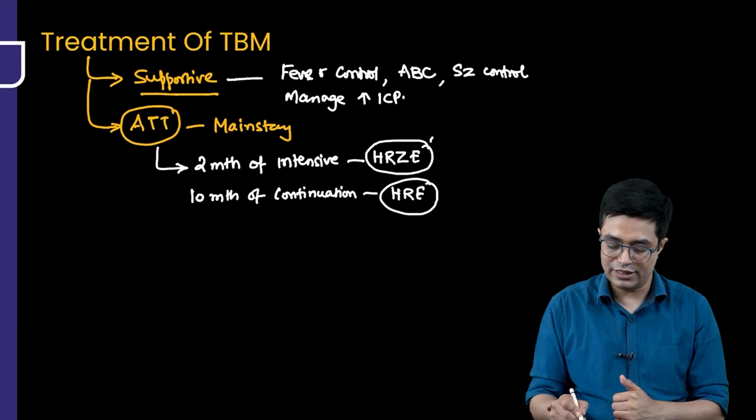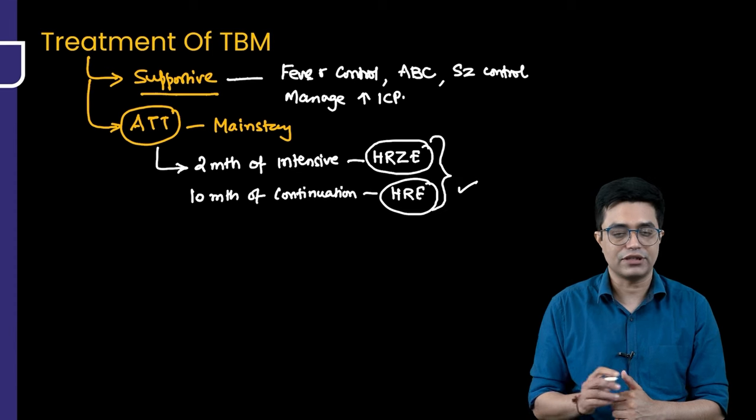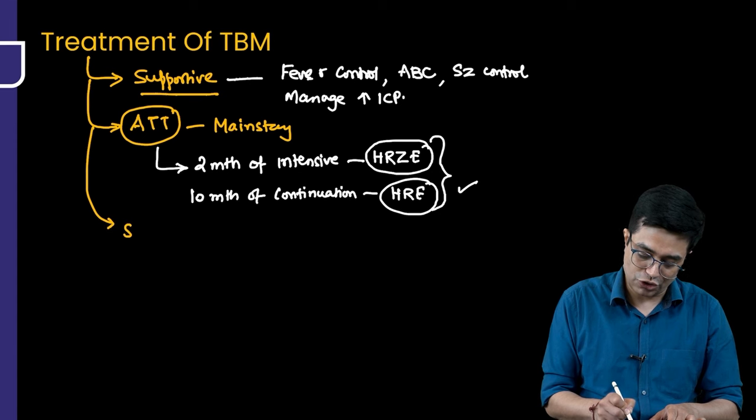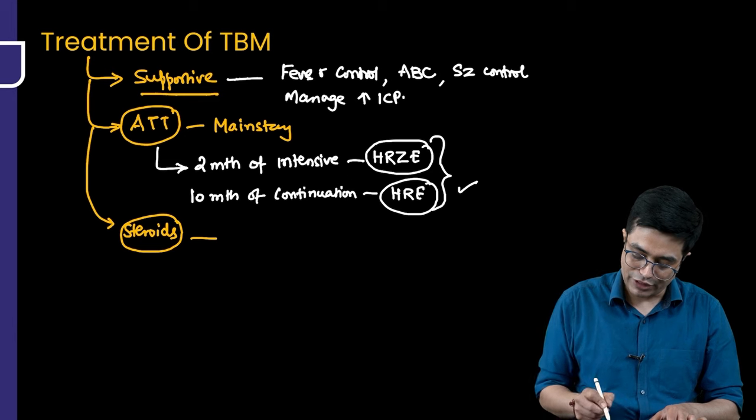Apart from ATT, you need to consider corticosteroids. Why are steroids needed? They reduce inflammation, reduce complication rates, and show better radiological resolution of the basal cistern exudates.